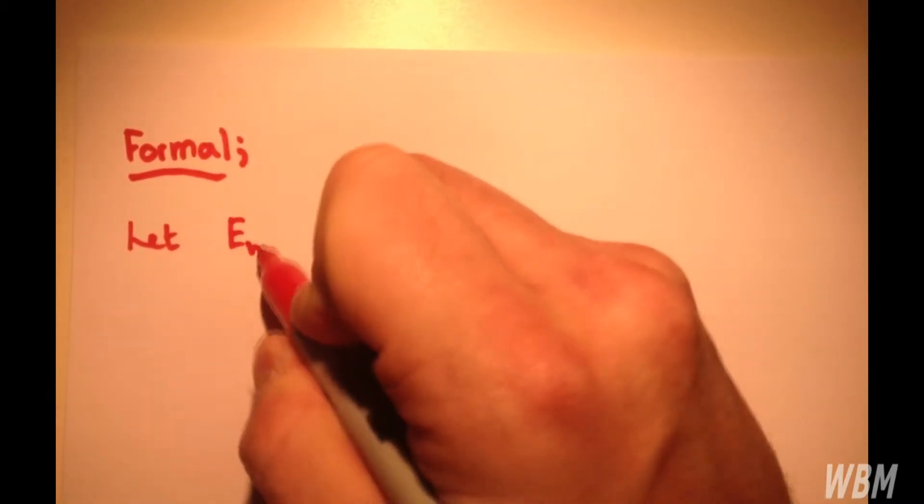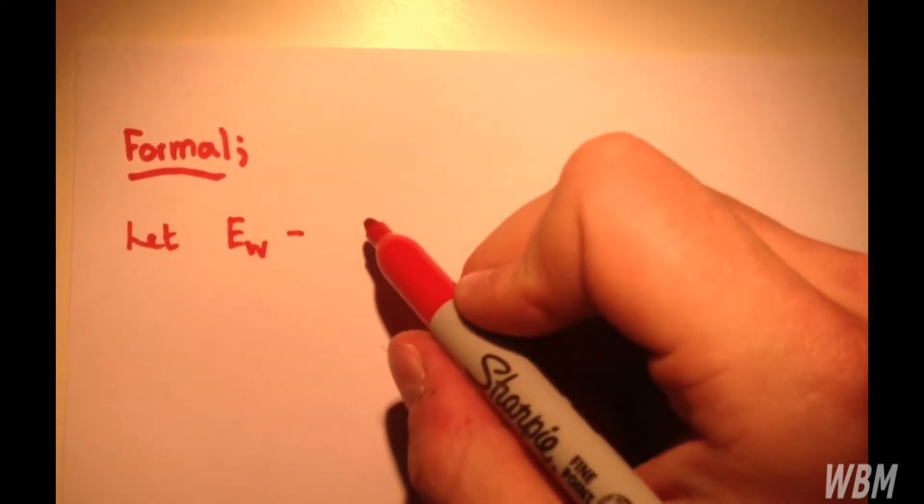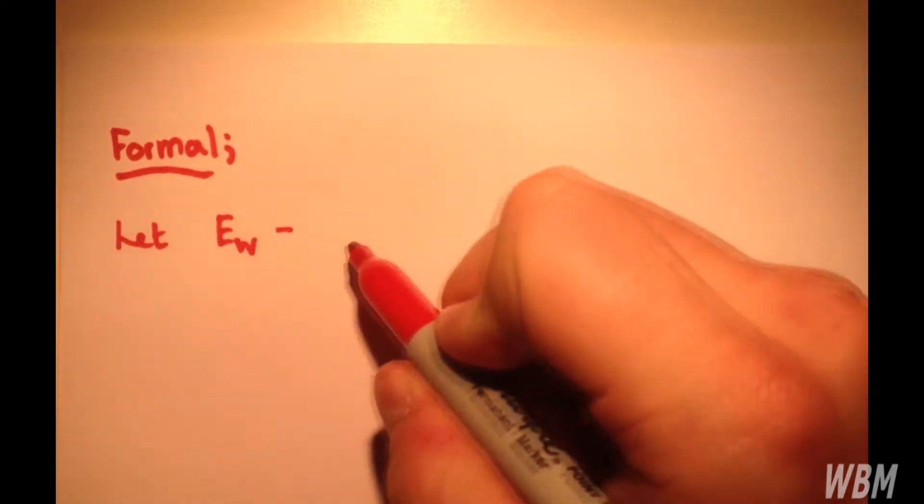So, formally, we let E sub w to be the sort of desired overall experiment-wise risk of type 1 error. So, normally we have 0.05,